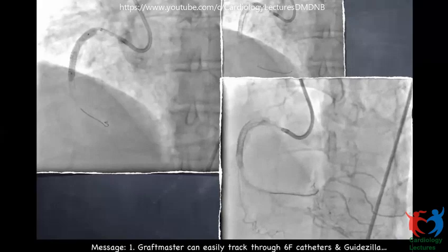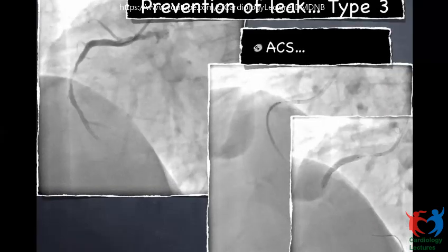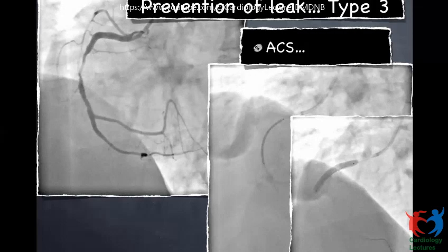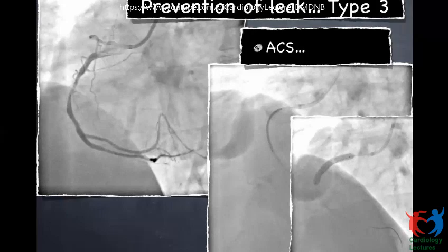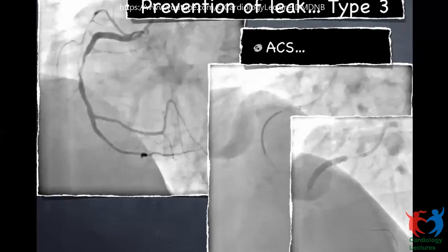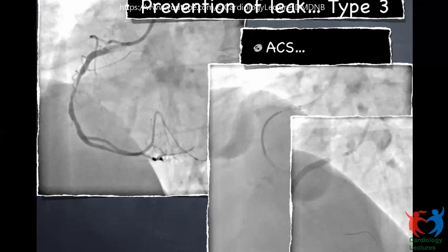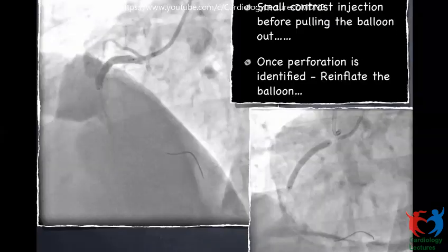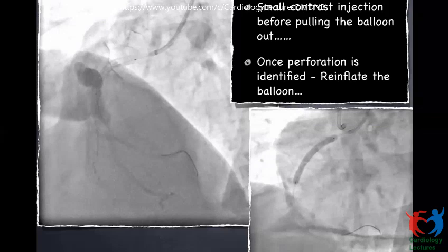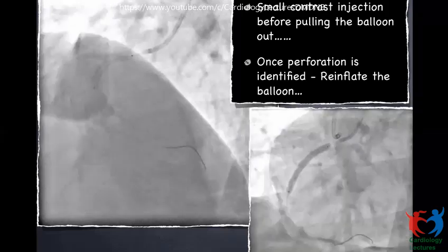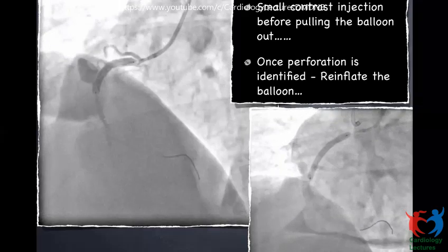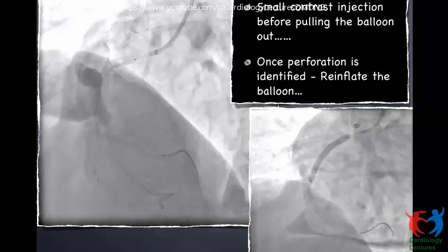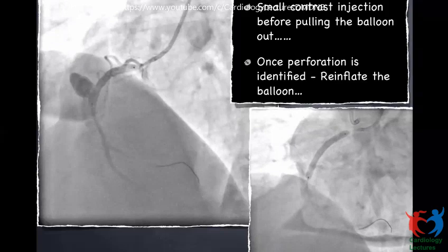This next patient had an acute coronary syndrome with a tight lesion in the proximal right coronary artery. We deployed a 4 mm stent directly. Following deployment, there was a Type 3 perforation — free flow into the pericardium. Before pulling the balloon out, we made a short injection and identified the perforation. The next step was to immediately dilate the balloon and partly reverse the heparin effect.